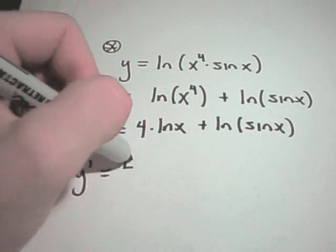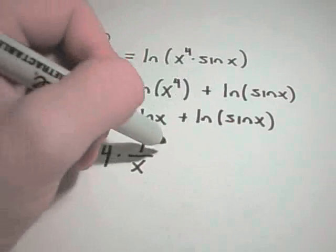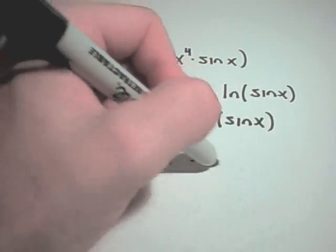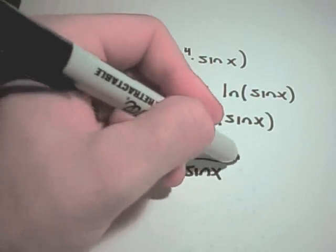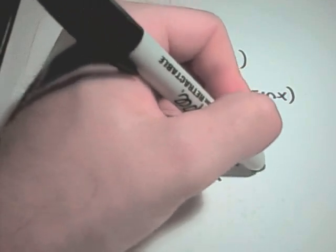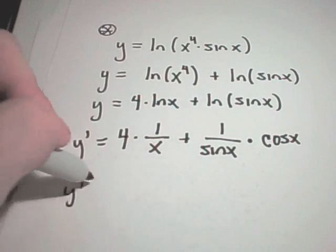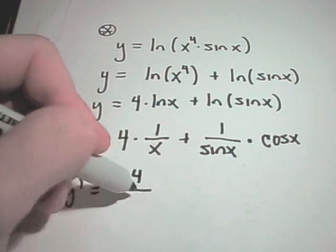The derivative of ln of x being 1 over x plus the derivative of ln of sine x is 1 over sine x. If you multiply by the derivative of sine x using the chain rule, we'll get cosine of x.